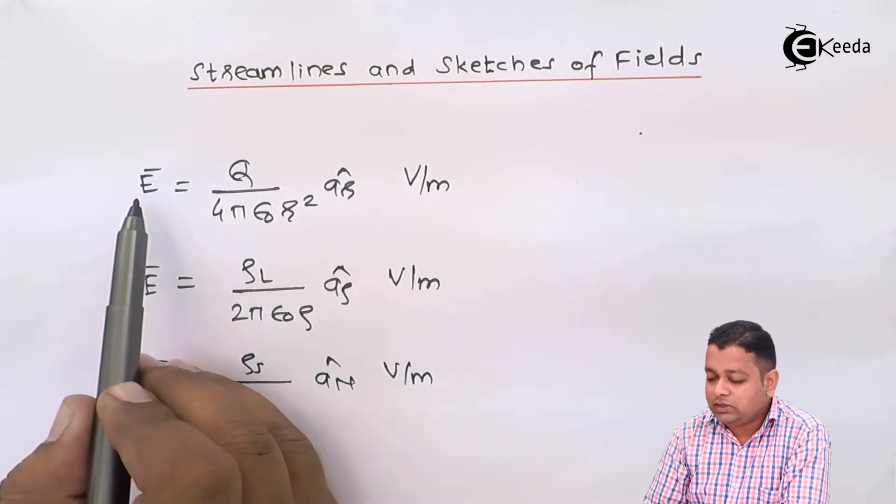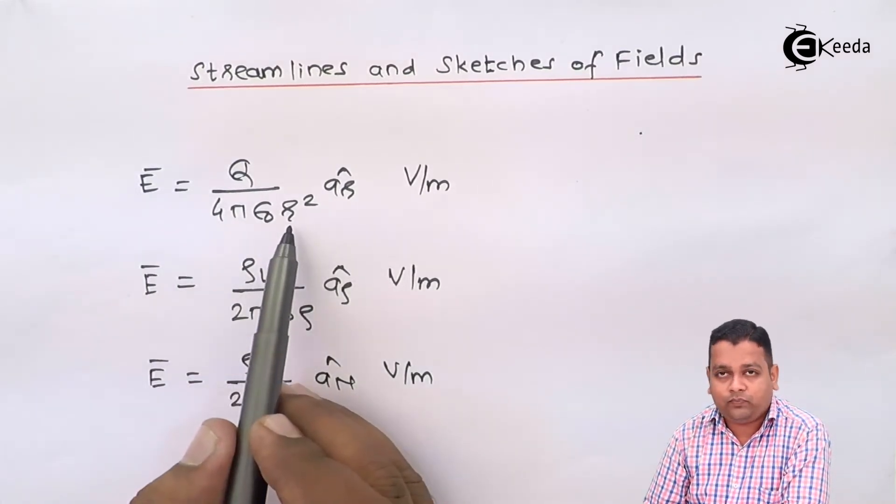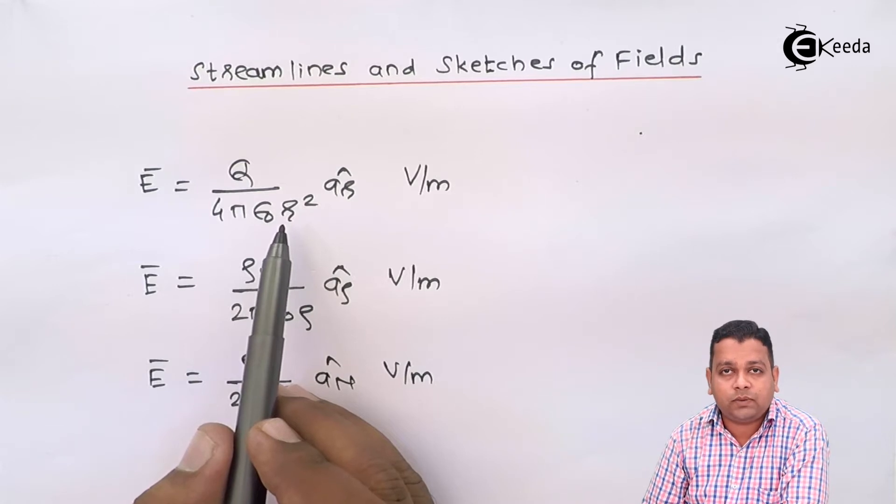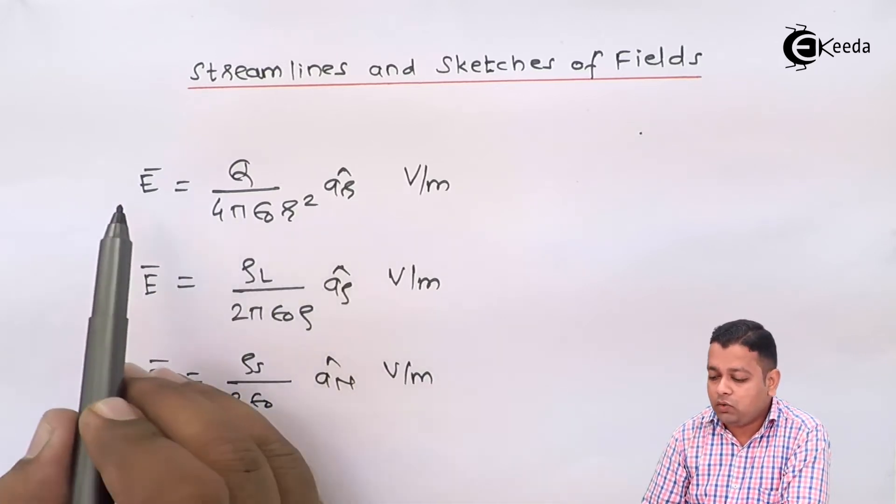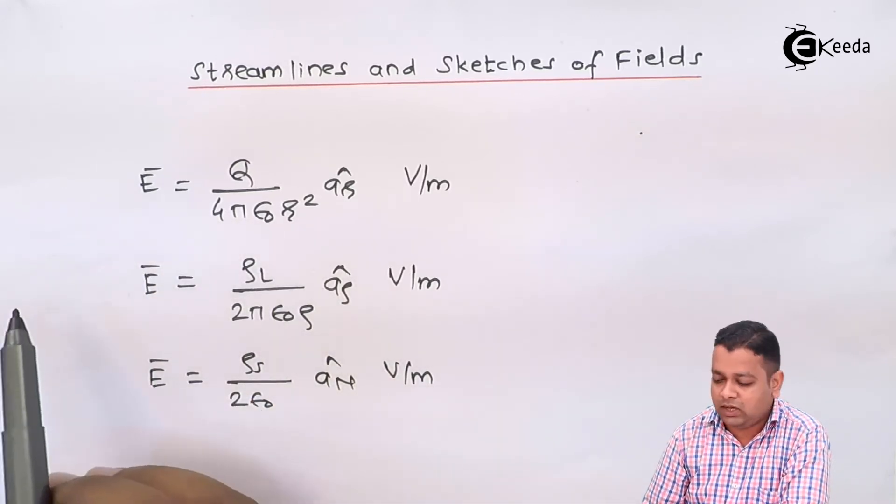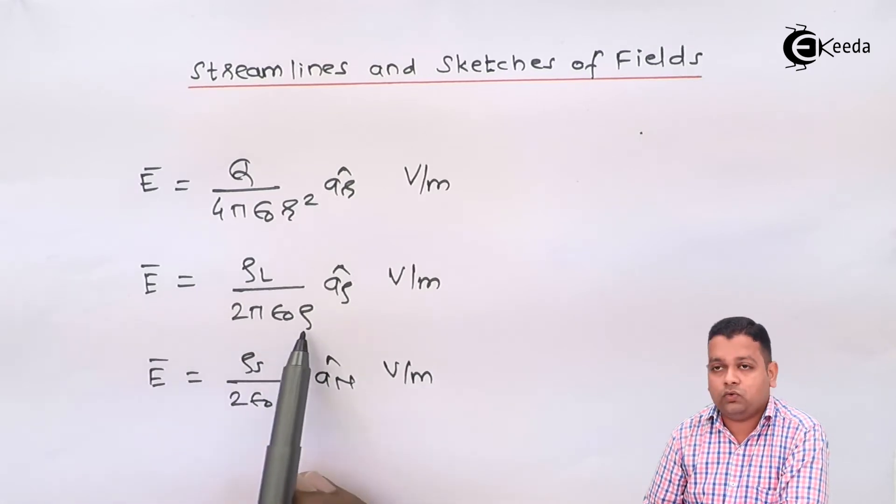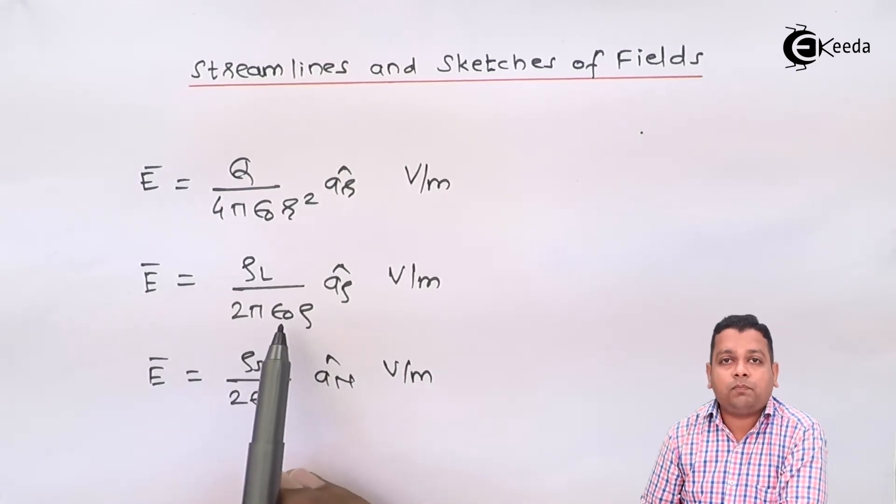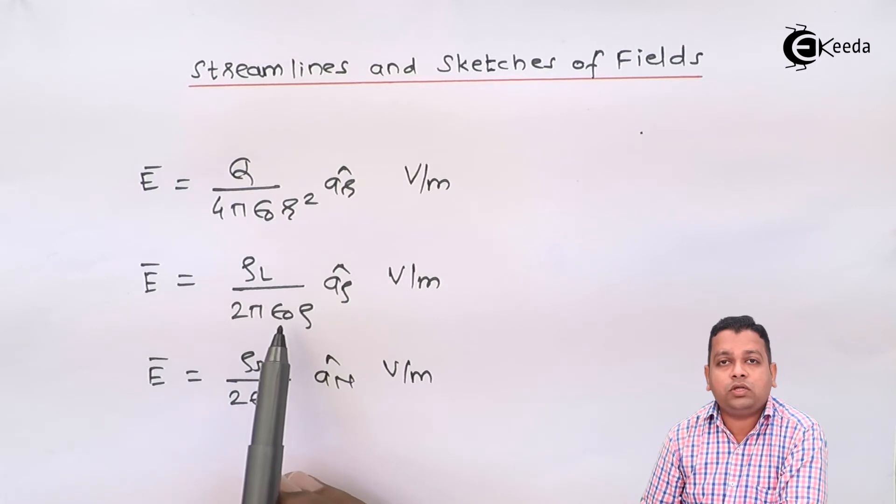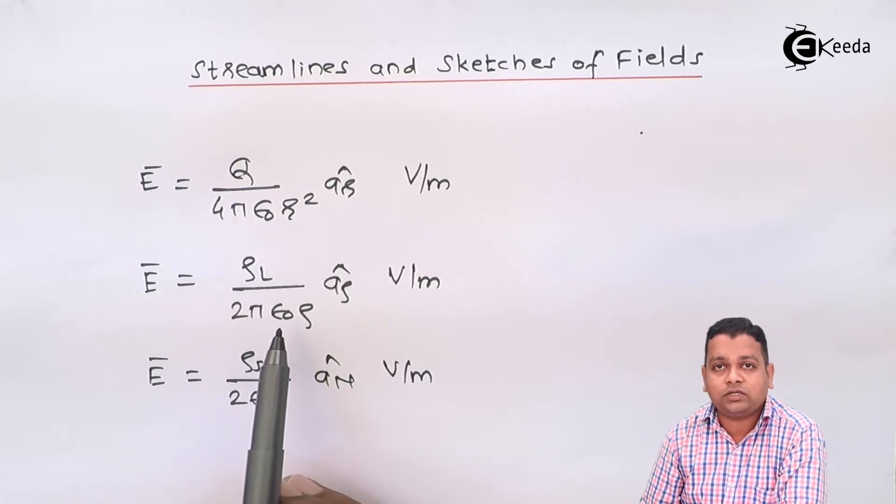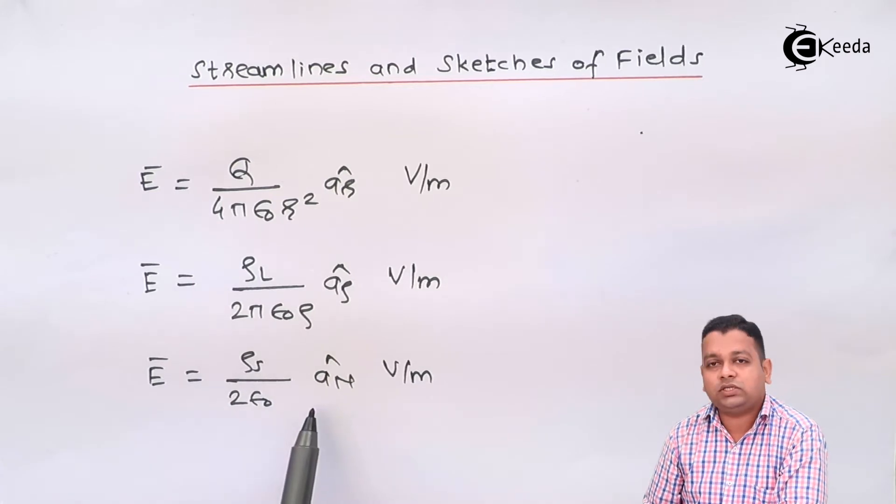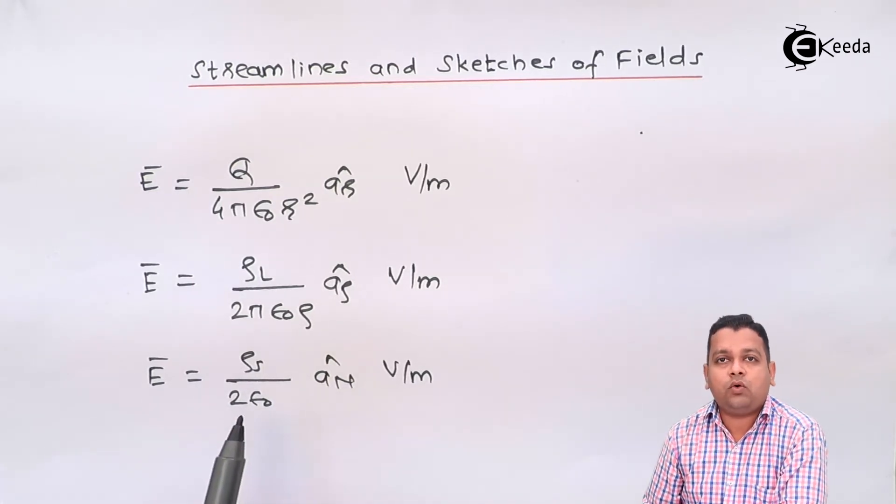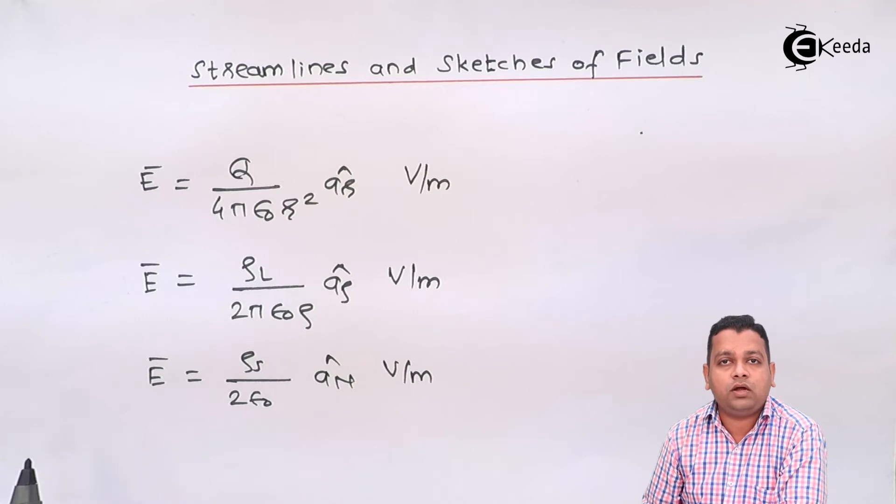Here electric field intensity depends on r. So r is the distance of separation between the source charge position and the field point where we are going to measure this electric field intensity. Here electric field intensity depends on rho. Rho we say it is the perpendicular drop onto the uniform infinite line charge from the position of field point.